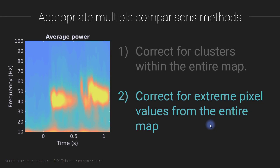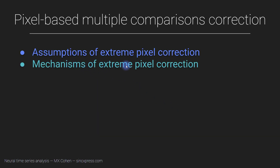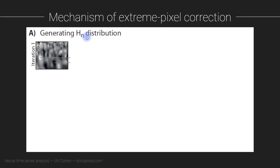Now I'm going to talk about the other multiple comparisons solution from permutation testing, and that is extreme pixel values. We'll discuss the mechanisms, the assumptions, and then compare the advantages and disadvantages between cluster-based correction and pixel-based correction. Pixel-based correction works in a similar way to cluster correction, except in the second loop over all of the permuted iterations.